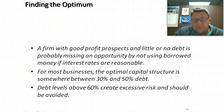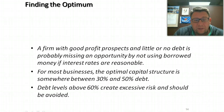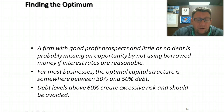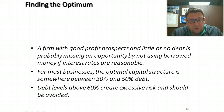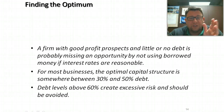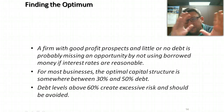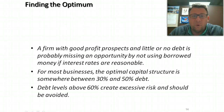Finding the optimum — here are some rules of thumb to consider. A firm with good profit prospects and little or no debt is probably missing an opportunity by not using borrowed money if interest rates are reasonable — we would consider that being under-levered. For most businesses, the optimal capital structure is somewhere between 30% and 50%. Although most firms are probably between 50% and 60%. Debt levels above 60% create excessive risk and should be avoided.